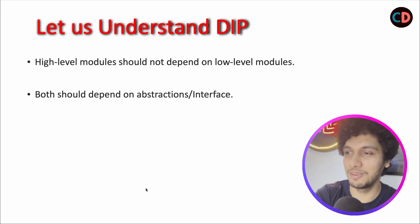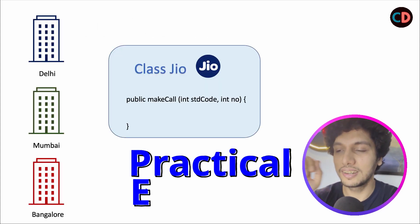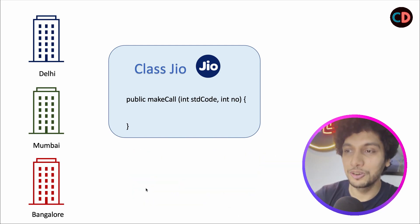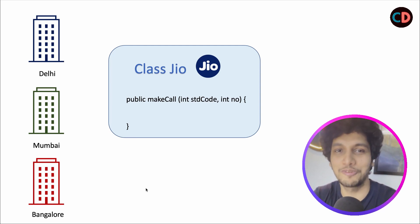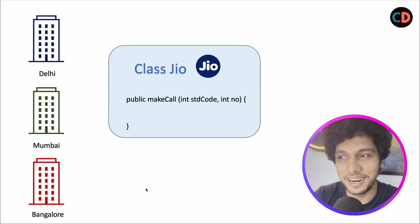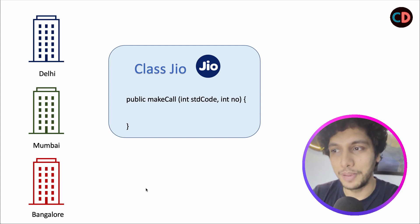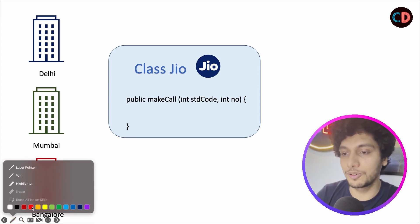What does it mean that high-level modules should not depend on low-level modules? Let's take a real-life example. Let's hypothetically assume that Coding Decoded is expanding in three cities — Delhi, Bombay, and Bangalore — and it wants to set up a network system to make calls. Jio is the first preferred choice across India. So we hired a contract with Jio, and it provided us APIs to make a call. It accepts two parameters: the STD code and the number you want to dial.